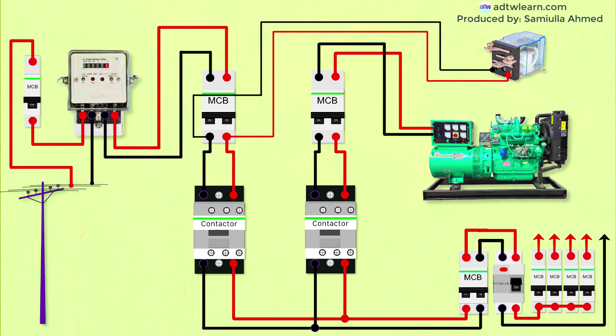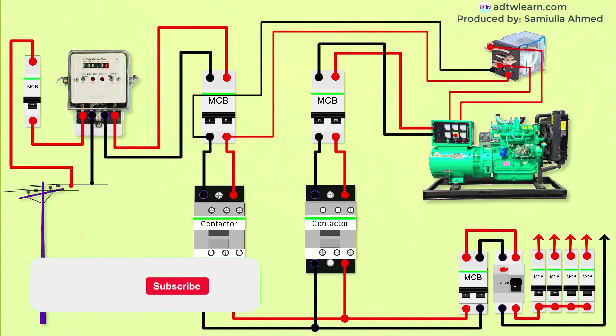Next, take the generator starter connection and connect it to the normally closed pins of the relay circuit. Since the supply is coming from the pole and energizing the relay coil, this normally closed switch will be open as long as the supply from the pole is coming. The moment the supply from the pole is stopped, the coil will demagnetize and the NC connection will close, thus starting the generator.